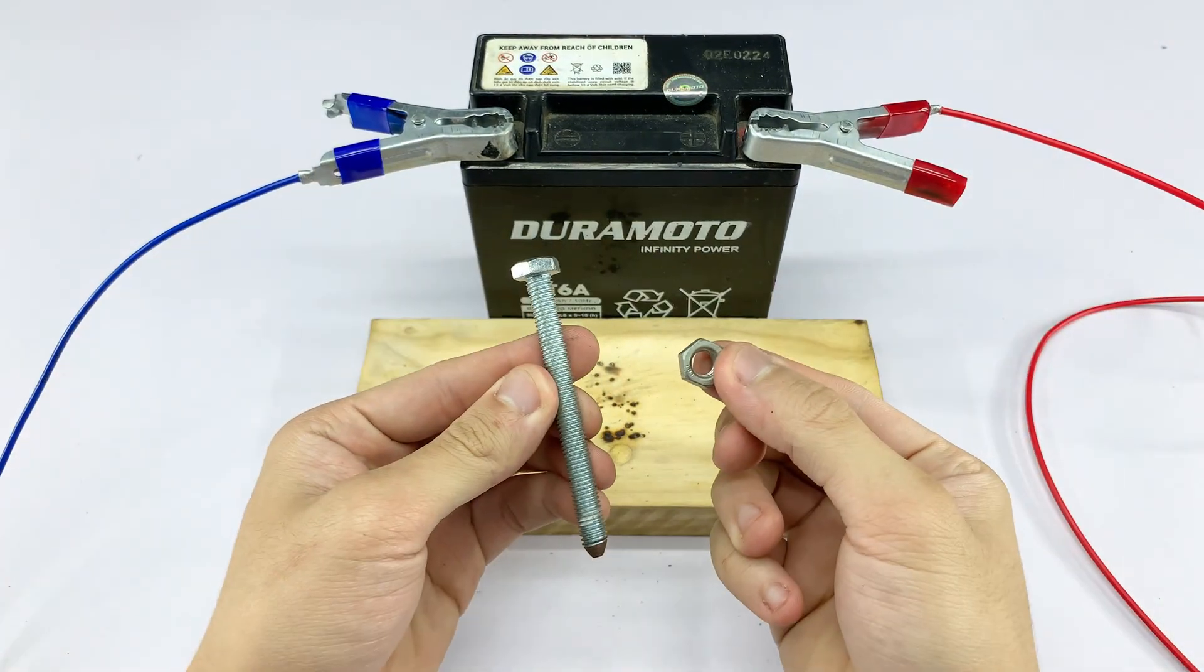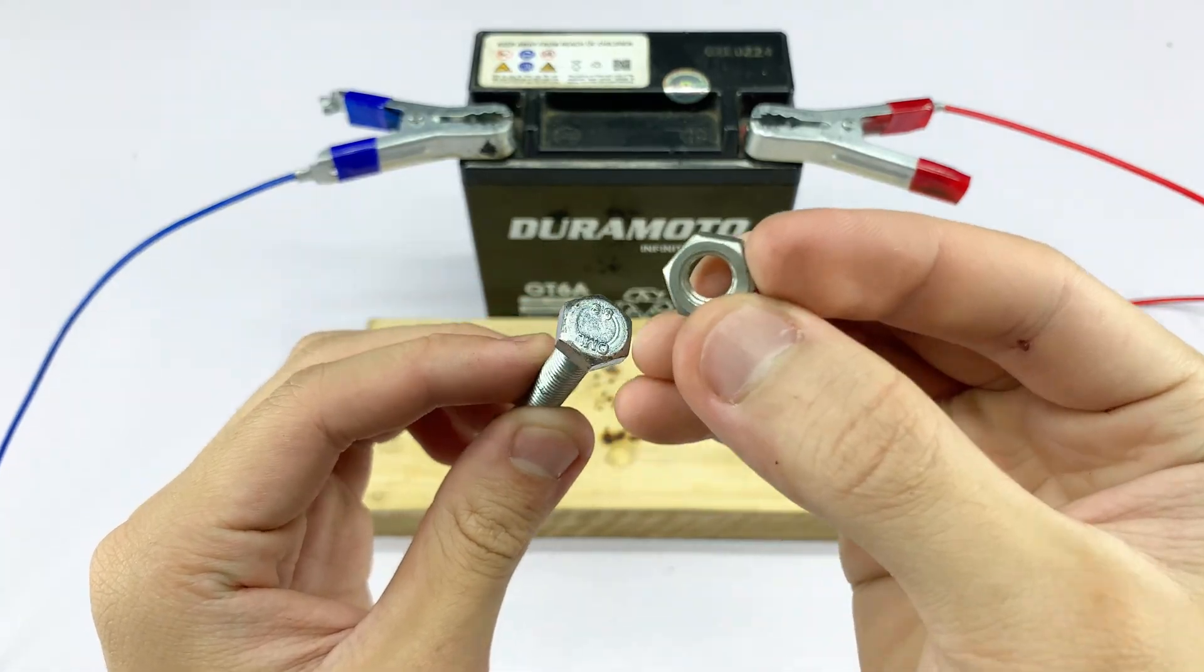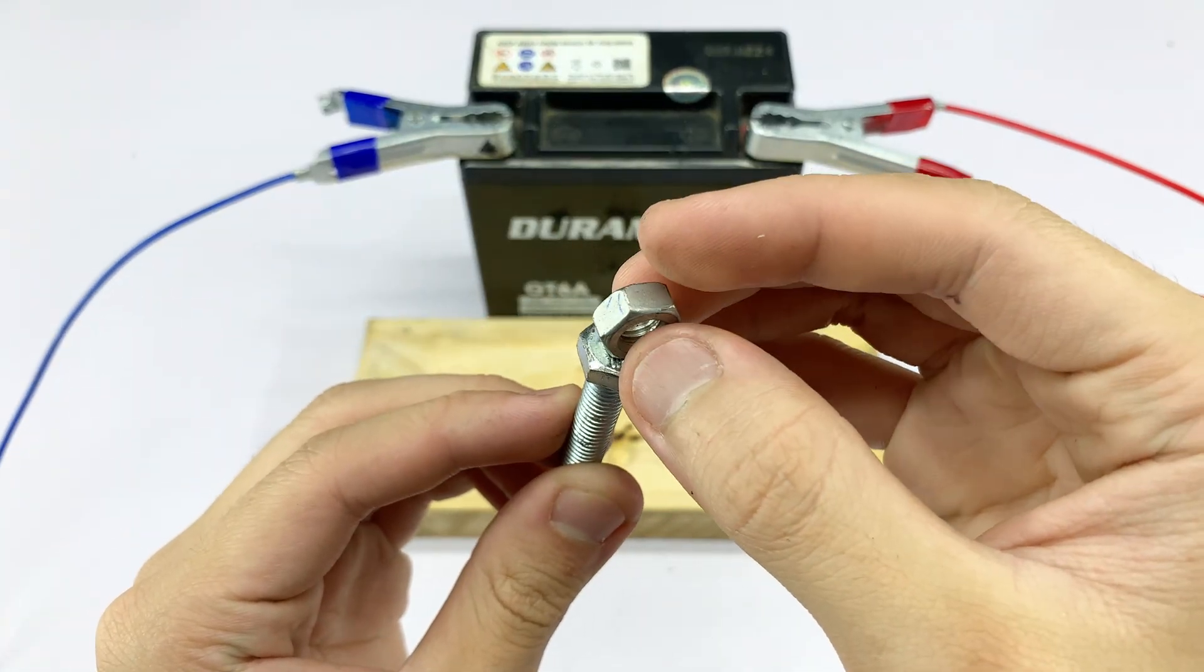For our final test, I'm taking a metal bolt and a nut. We'll see how our DIY tool handles a larger, thicker piece of metal.